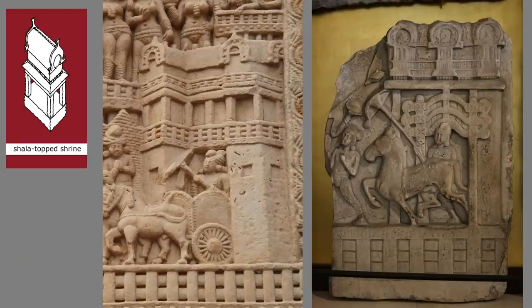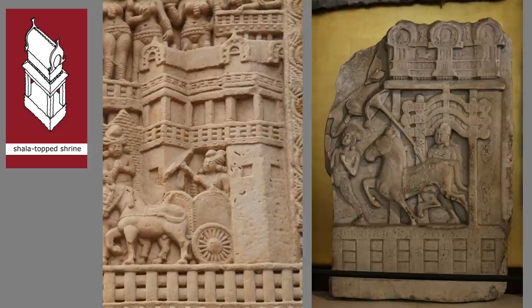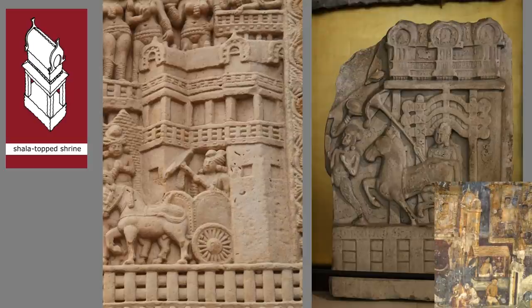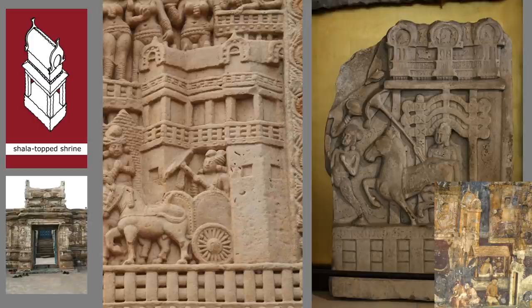The rectangular equivalent of the kuta is the shala. The shala-topped shrine form is also a typical gateway form, as we see from an early date, and it retains its associations with gateways. The gopura of the 8th century Kailasanatha temple at Kanchipuram is the forebear of the later towering gopurams of South India.